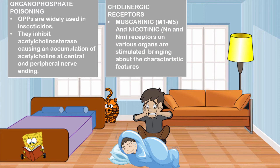Remember that these cholinergic receptors are both muscarinic receptors M1 through M5 as well as nicotinic receptors, NM and NN, on various organs, and these are going to be stimulated, bringing about the characteristic features of the condition.